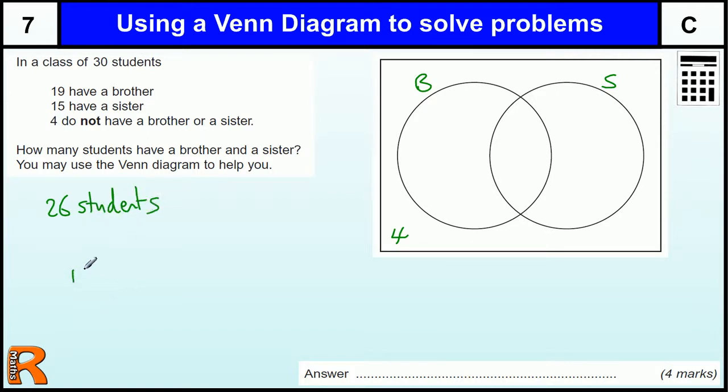Now 19 have a brother and 15 have a sister. That adds up to 34. But there's only 26 students to distribute in the brothers and sisters. That means there's an overlap.